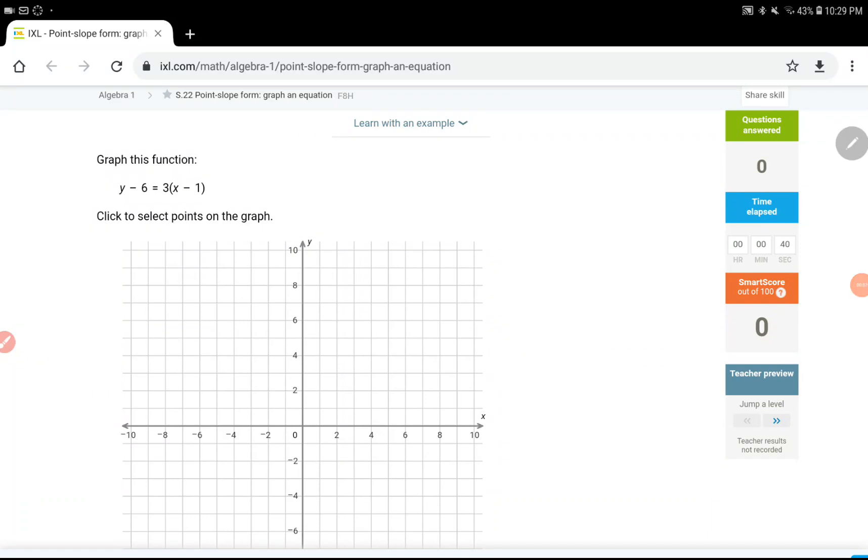Hey everyone, this one is the fourth assignment of the week, S22 on IXL. It's about point-slope form, graphing an equation when the point-slope form is given.